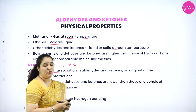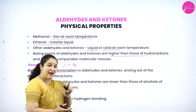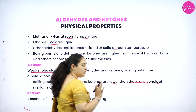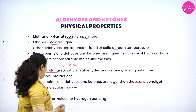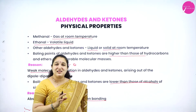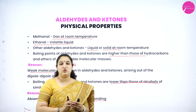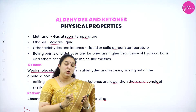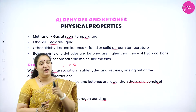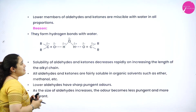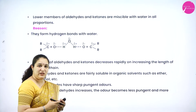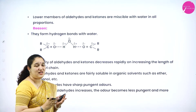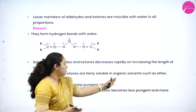The boiling points of aldehydes and ketones are lower than that of alcohols, because alcohols have intermolecular hydrogen bonding, whereas aldehydes and ketones cannot form intermolecular hydrogen bonding within the molecule. That is why their boiling points are lower than alcohols but higher than hydrocarbons and ethers. Regarding solubility, lower members are easily soluble in water, whereas as the number of carbon atoms increases the solubility decreases, but they are fairly soluble in organic solvents.